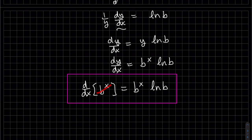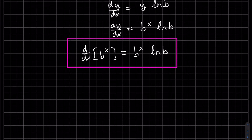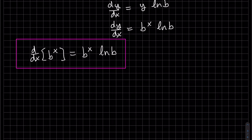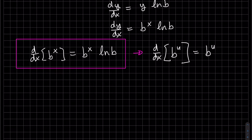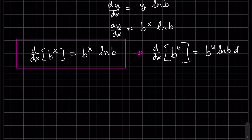The derivative of e to the x was e to the x, and if you apply this formula it would be times natural log of e, which cancels to 1 — so that's consistent. If we want to write it out using the chain rule with u as a function of x, we copy it, include our natural log of b as part of the formula, and then chain rule it — the derivative of the inside, du/dx.